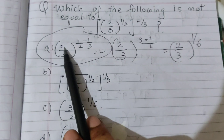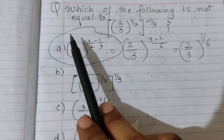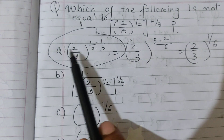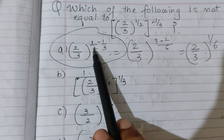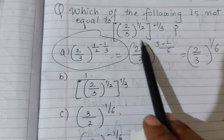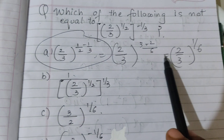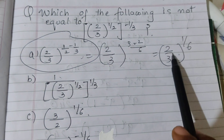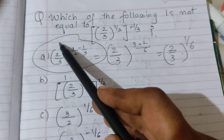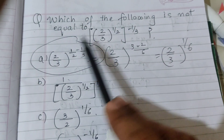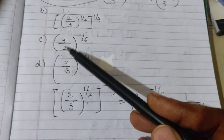Let's verify once more. For option A, (2/3)^(1/2 - 1/3): taking LCM as 6, we get 1×3 = 3 and 1×2 = 2, so 3 minus 2 over 6, giving (2/3)^(1/6). Since this is (2/3)^(1/6) and the original is (2/3)^(-1/6), option A is clearly not equal to the original.